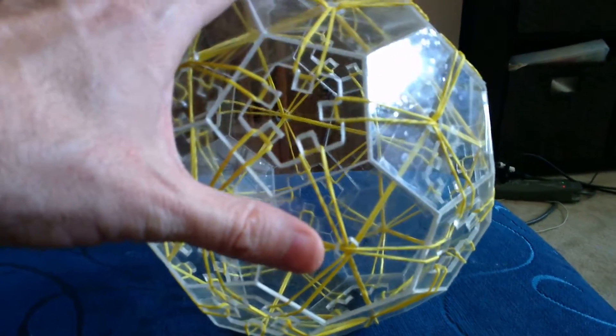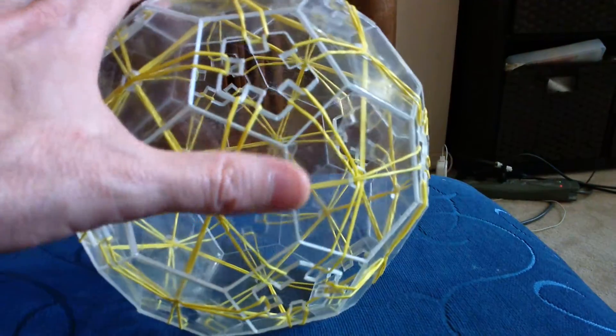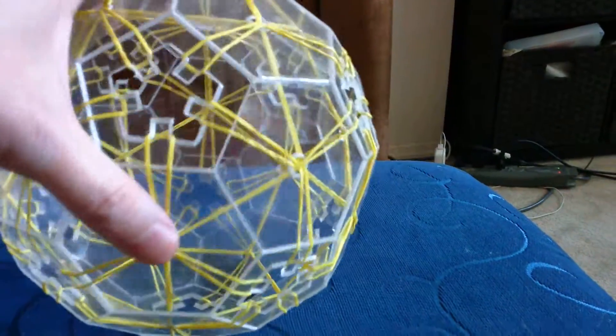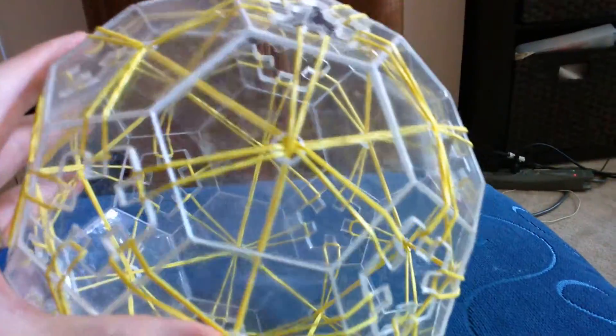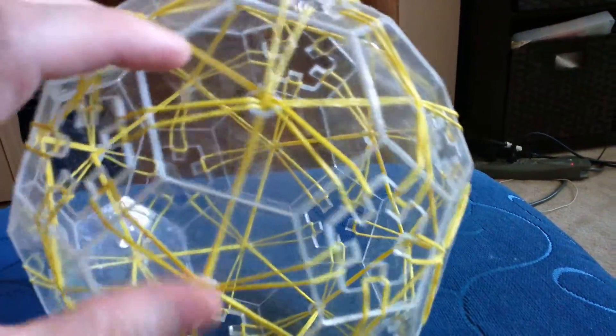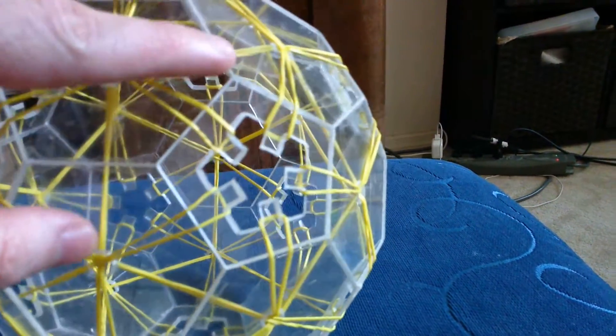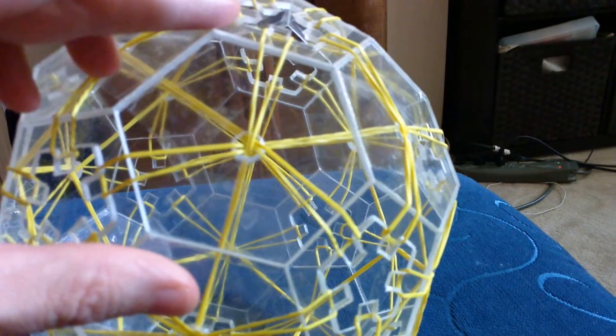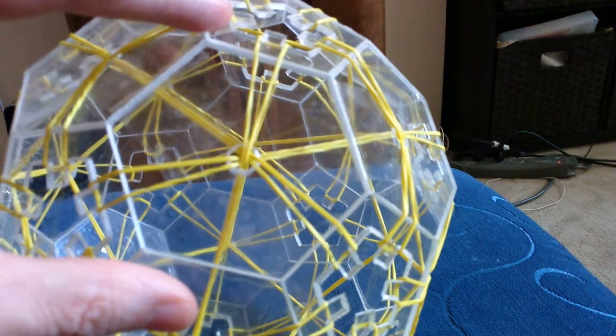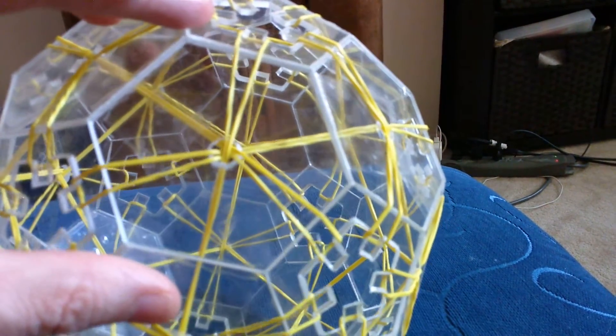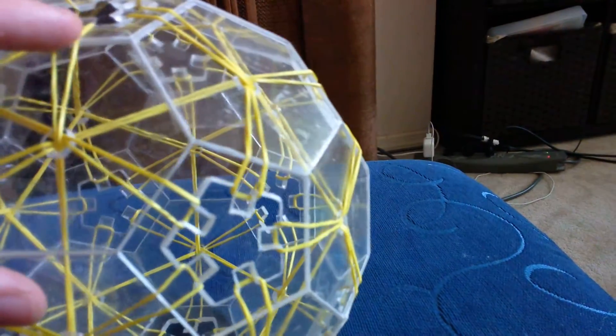Each pentagon has five teeth over which the rubber bands are hooked, and each hexagon has a hole. The rubber bands pass over one side, one edge, through the hole and under the other edge. And so there are three edges held down and three edges held up by each rubber band.